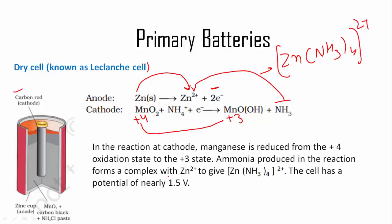The cell has a potential of about 1.5 volts. Now there is a question: if we don't use a dry cell for a longer time it becomes dead. Why? Because ammonia produced corrodes zinc.